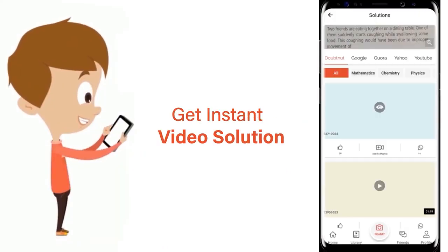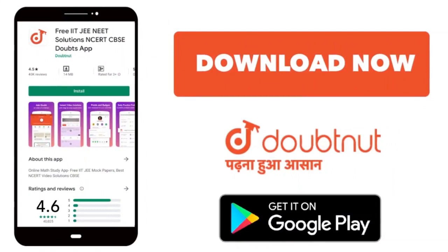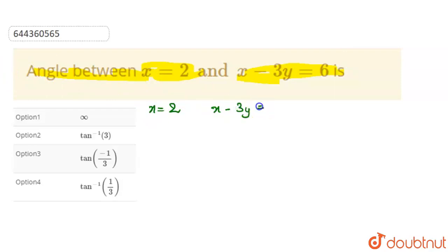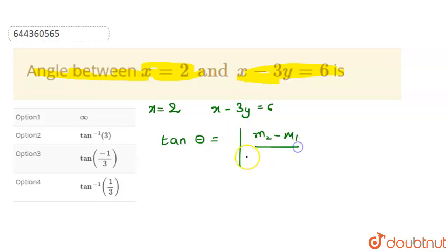Today our question is: find the angle between x = 2 and x - 3y = 6. The given equations are x = 2 and x - 3y = 6. We know that to find the angle between two lines, we have the formula: tan θ = (m₂ - m₁) / (1 + m₁m₂).